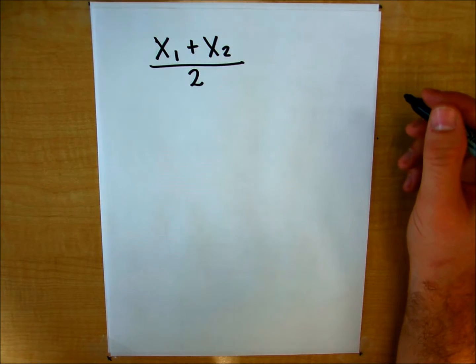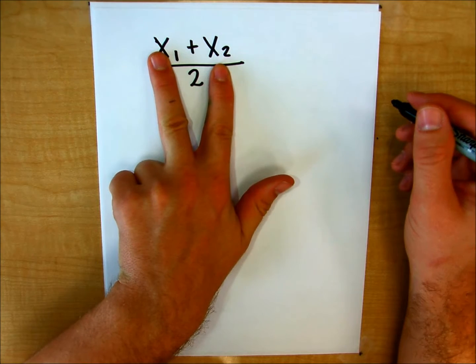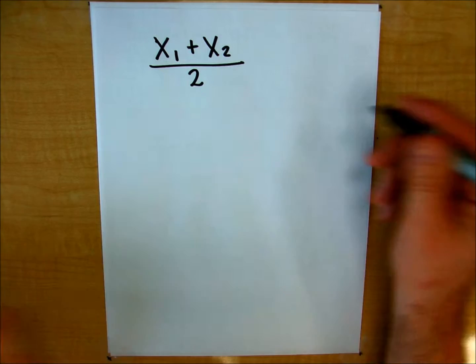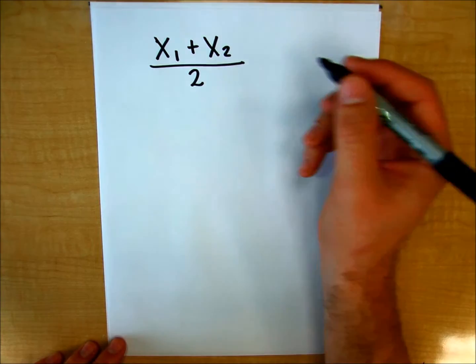And my two x values are going to be my two zeros. And that's, you're going to get that by using the quadratic formula.